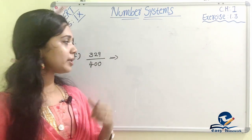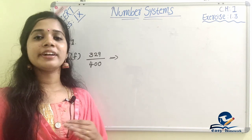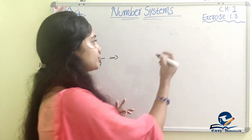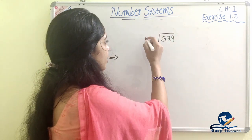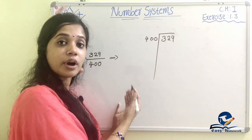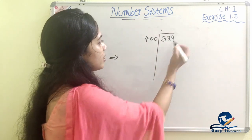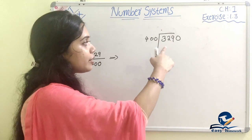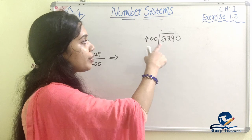Last problem: 329 divided by 400, decimal form and type of decimal expansion. We will divide 329 by 400 using long division. 400 does not go into 329, so we start with the decimal.